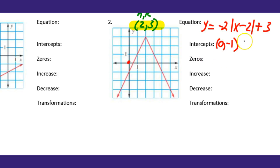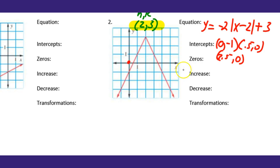So our zeros are x = 1/2 and x = 7/2. Those are the zeros. Now increase and decrease — again trace the graph from left to right. Negative infinity is way out to the left, positive infinity to the right, and in the middle we have x = 2.